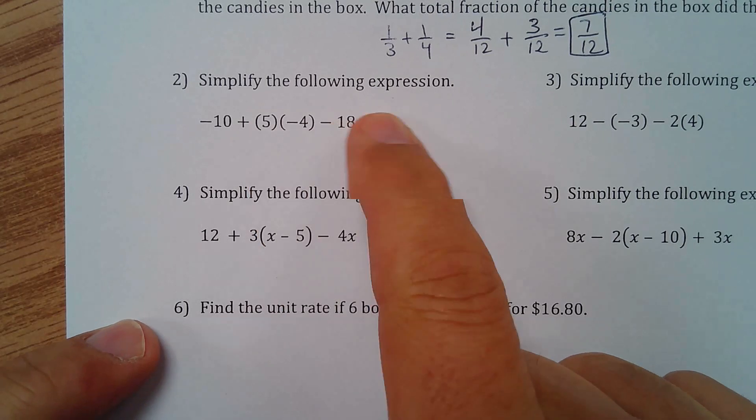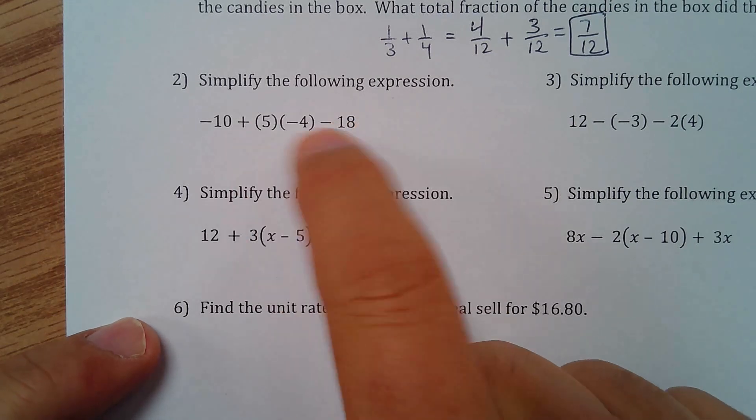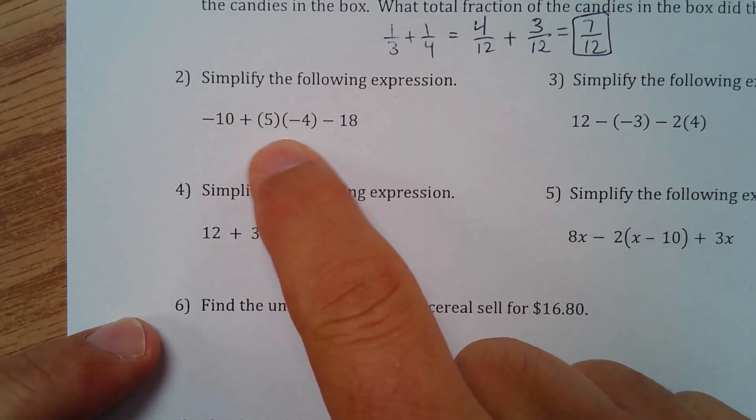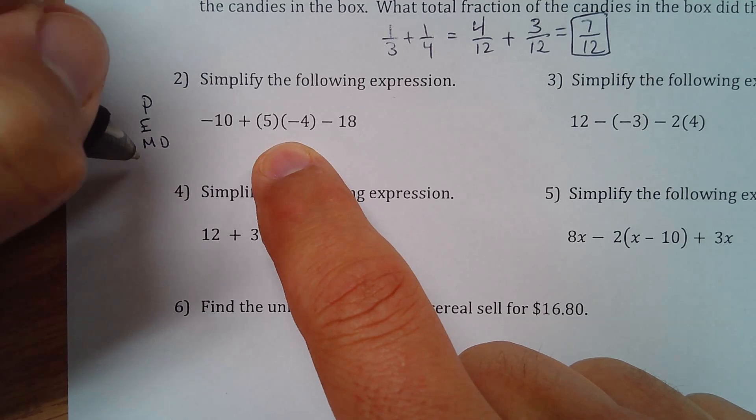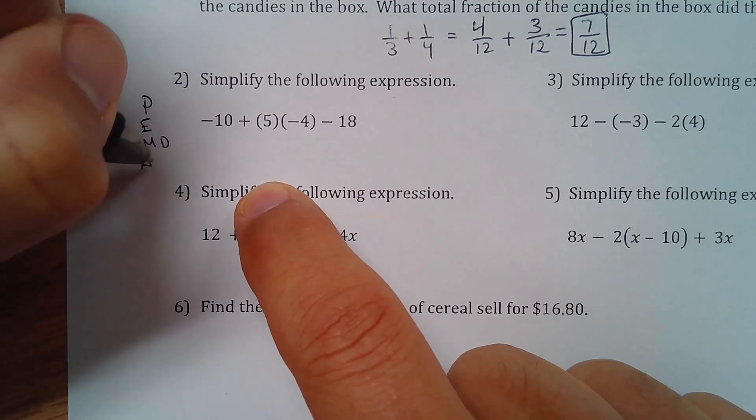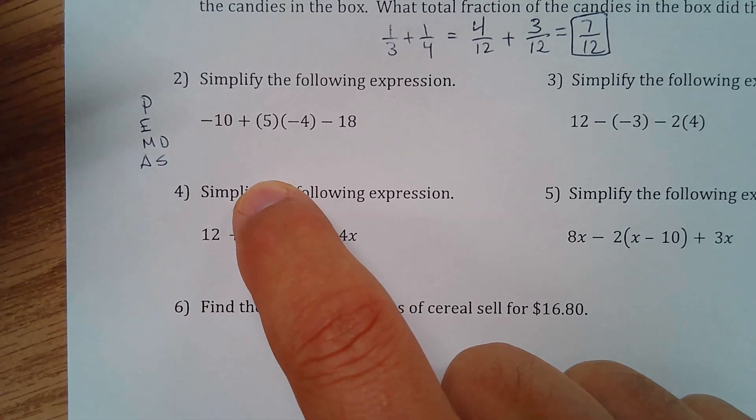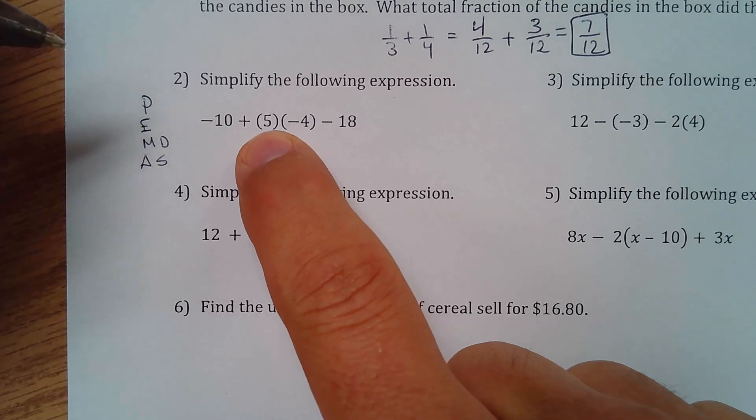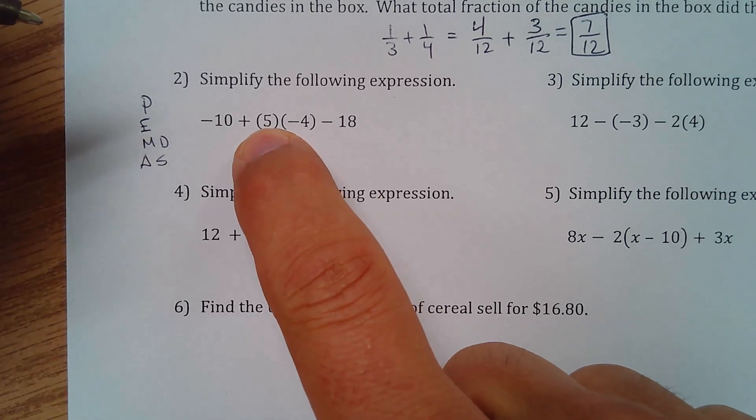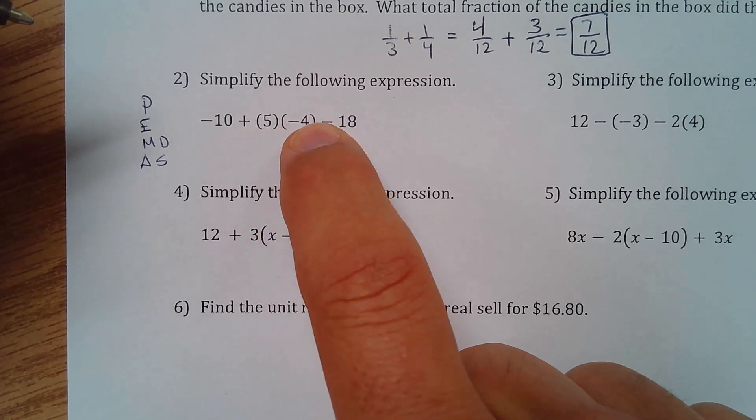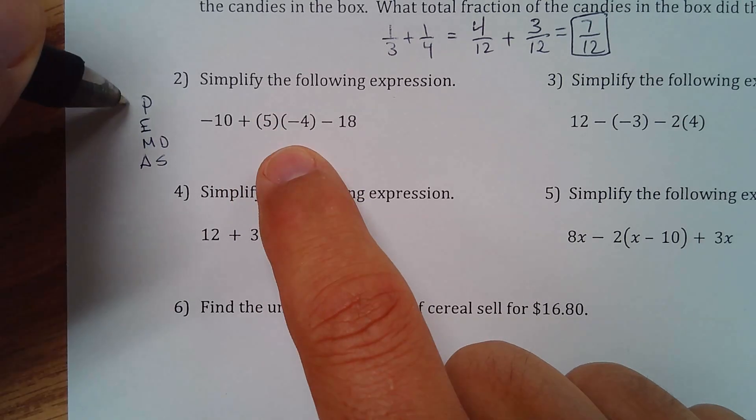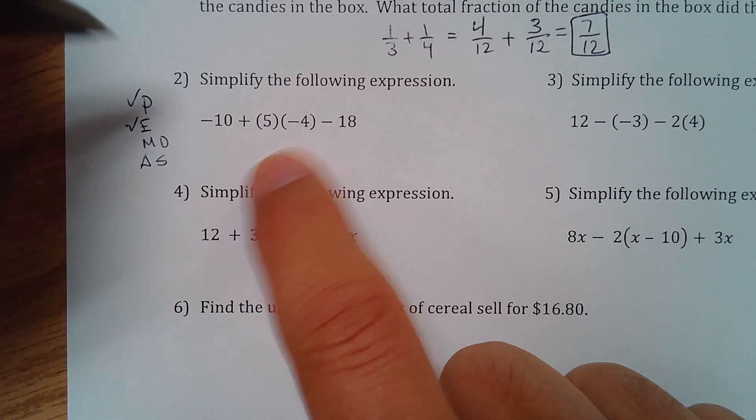This one right here. Simplifying the expression. Expression is a bunch of stuff here without an equal sign. So we have to follow the order of operations. Parentheses, exponents, multiply or divide from left to right and then add or subtract from left to right. So parentheses. There are parentheses here, but there's nothing to do in the parentheses. And really, these parentheses are here just to separate 5 and negative 4 to tell you that that's 5 times negative 4.